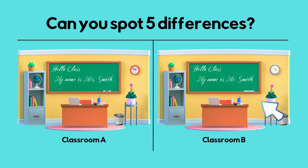The flower is backwards or facing the wrong way. In Classroom A, the bin is on the left. In Classroom B, the bin is on the right.